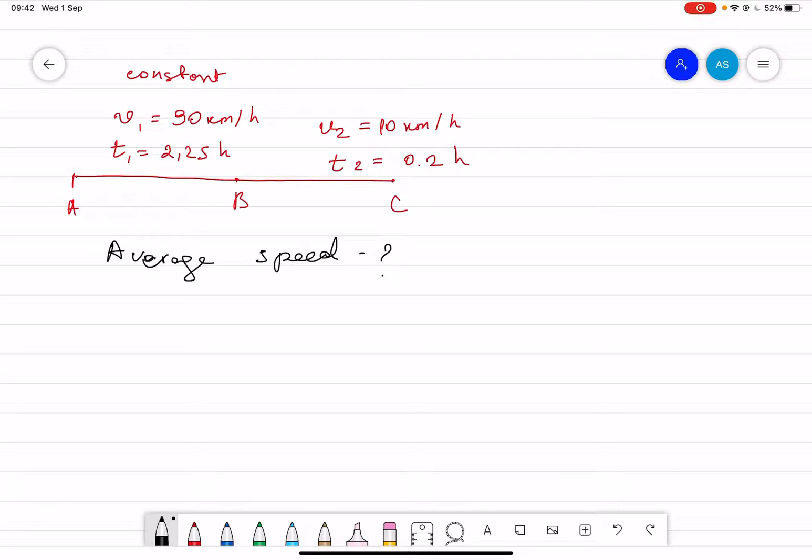So I will write it down. The first part which traveled, I call d1, and the second part I call d2. We have to find average speed. Now what is the formula of the average speed?